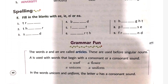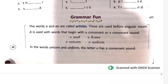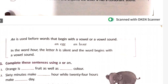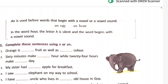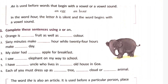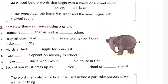Grammar Fun. We will show articles — use of A, AN, and THE. 'A' is used with singular words that begin with a consonant sound. 'AN' is used with a vowel or vowel sound in singular number. 'THE' is used for particular things.